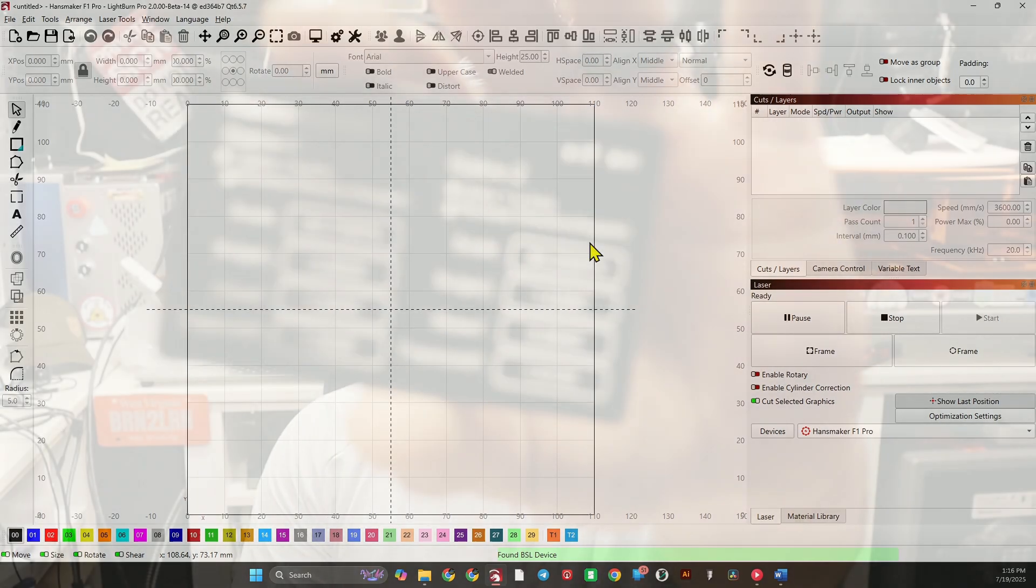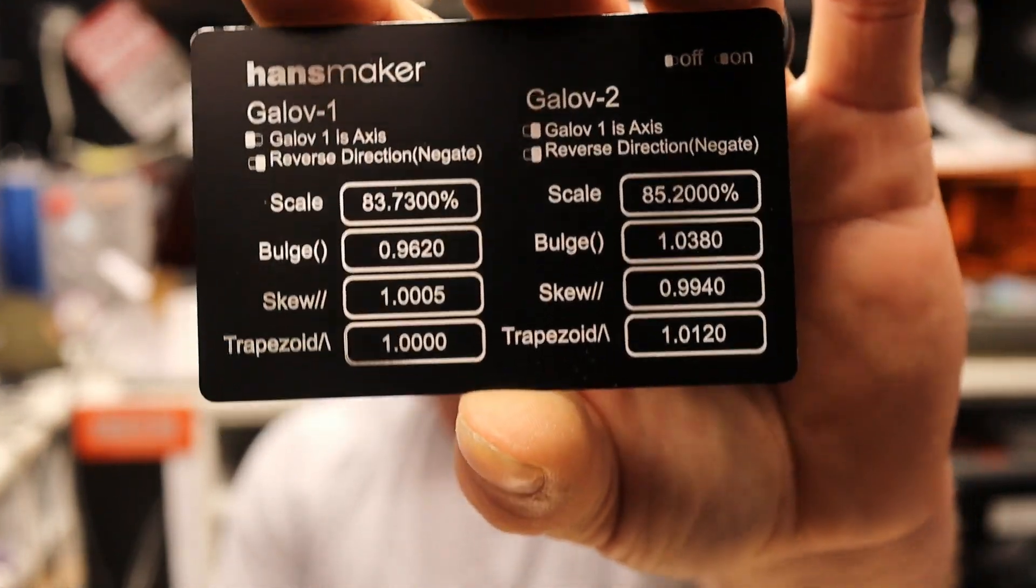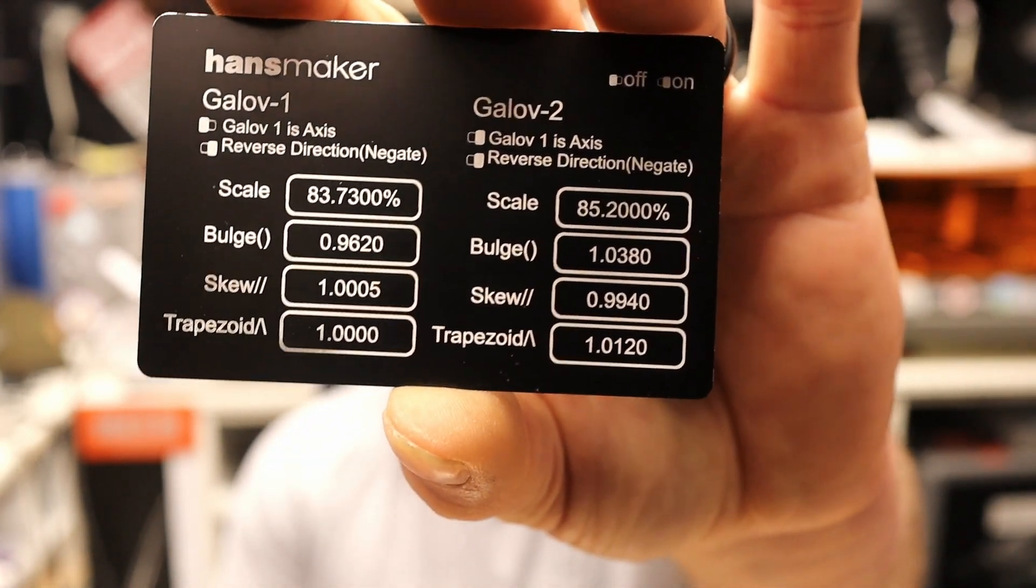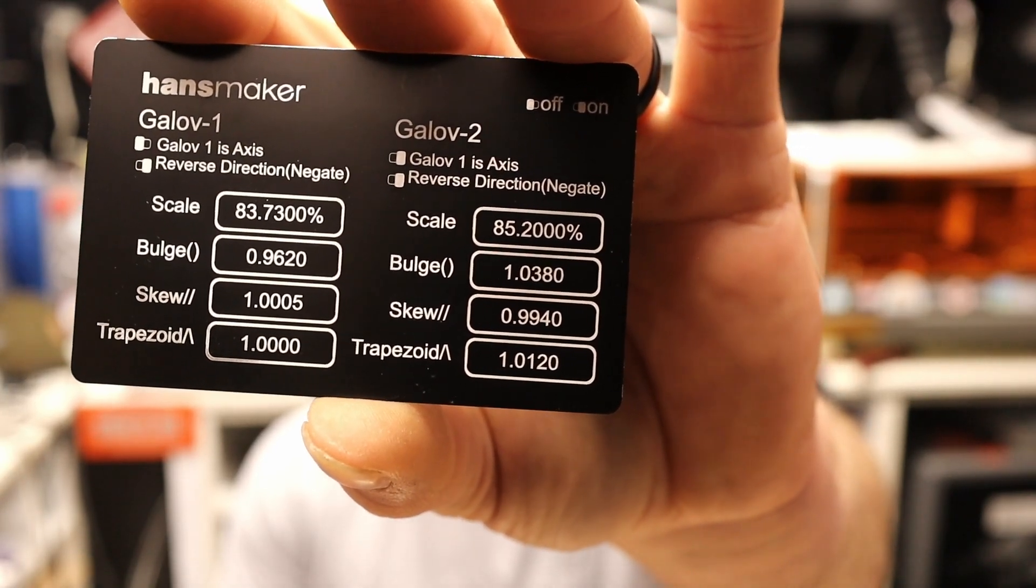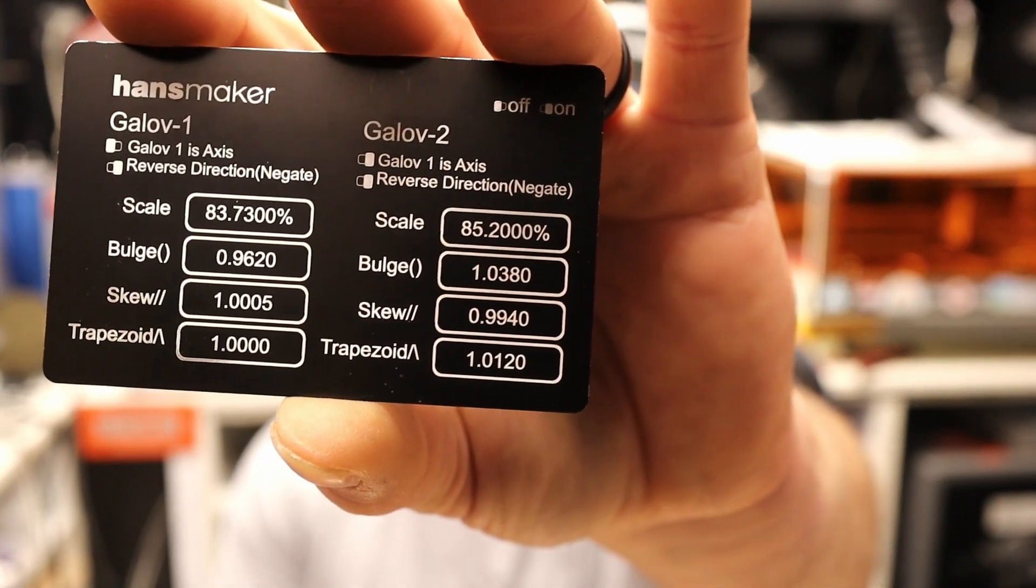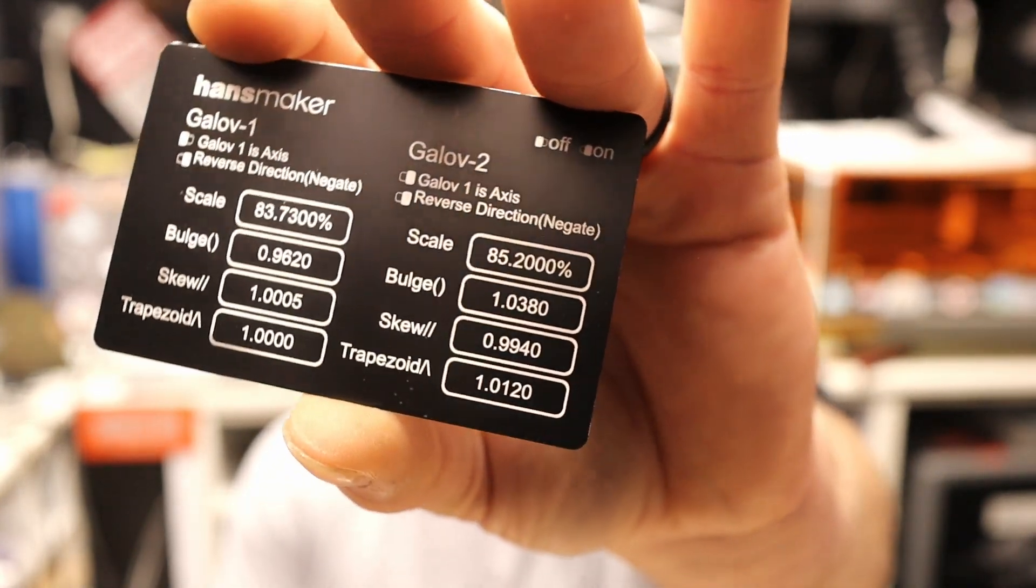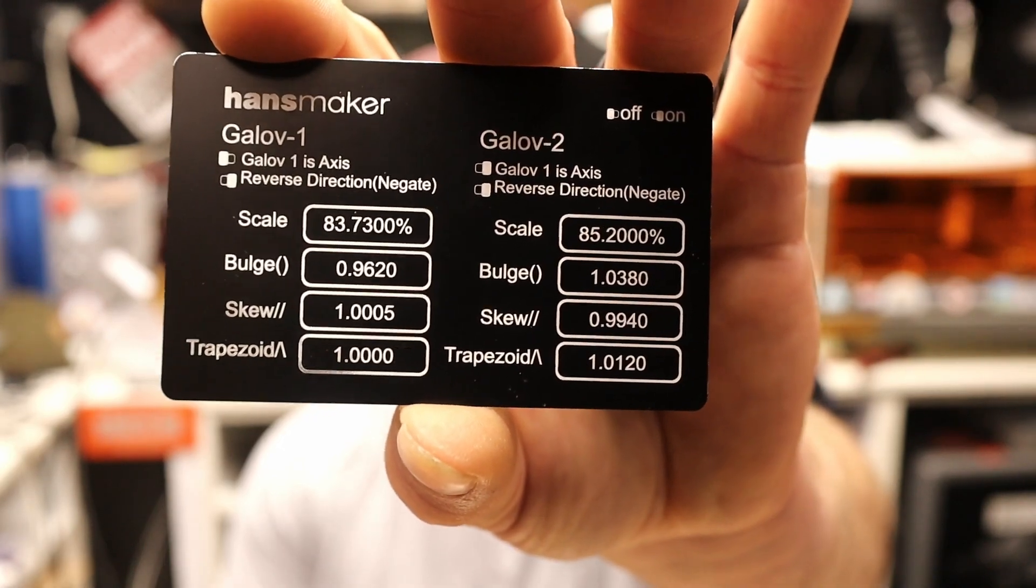The first thing I'm going to do is enter these numbers from this card. So, I'm going to spare you the time that it takes to enter. But you'll notice there's also the tick boxes for Galvo 1 is axis and reverse direction. So, it shows you which way those should be flipped either on or off. Left or right. So, I will input that right now.